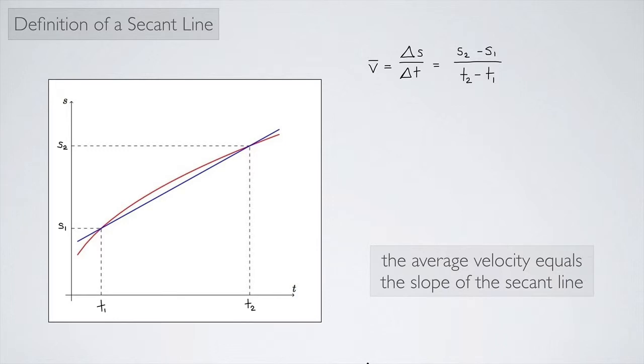So this line is called a secant line. A secant line is just a line that connects any two points on a graph.